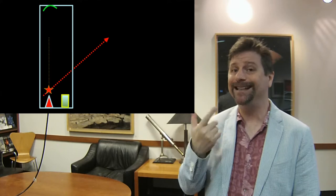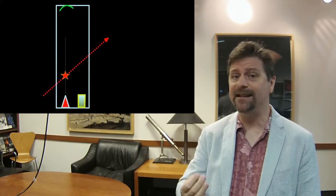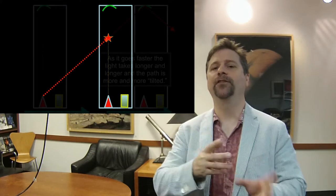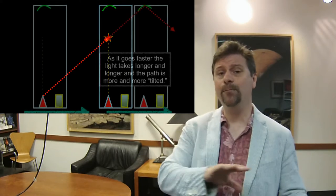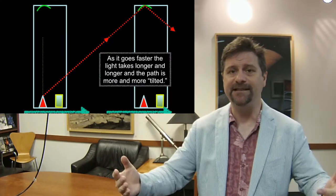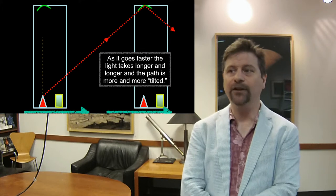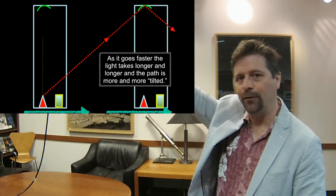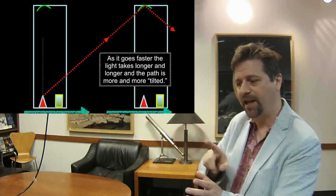The light pulse never leaves the tube — it stays inside. So as the tube moves, we see from the outside that the light pulse appears to travel at an angle. Because as the tube moves, the light stays inside, so from the outside perspective it's going diagonally. If it's going at half the speed of light, you've got an interesting triangle.